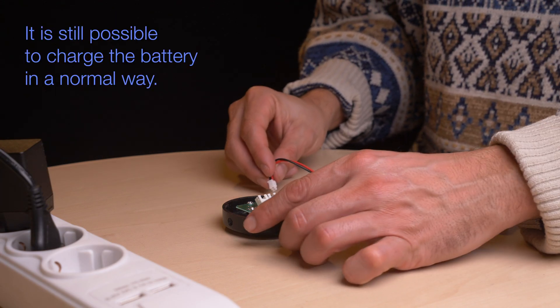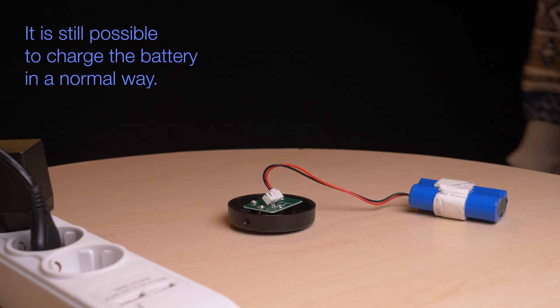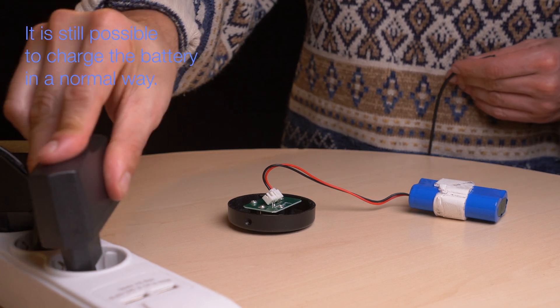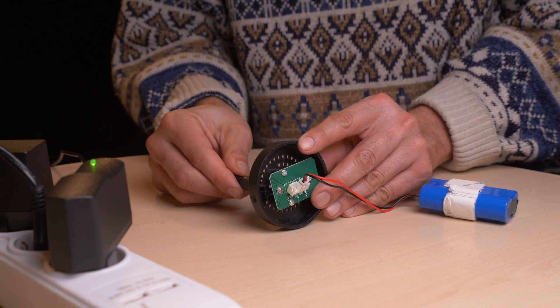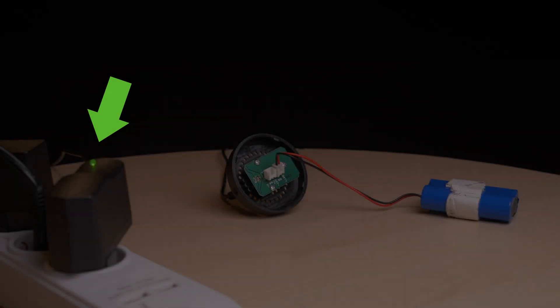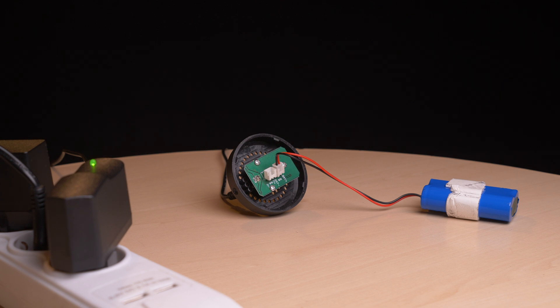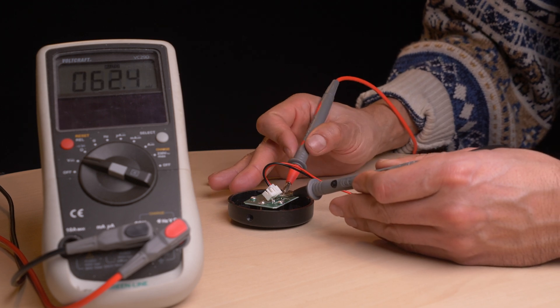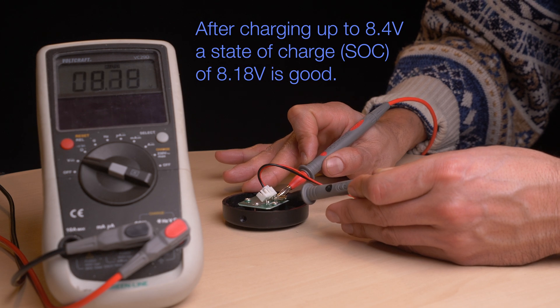It's still possible to charge the battery. Just connect the wire to bat, B-A-T, and charge it as normal. One lithium-ion battery has a normal voltage of 3.7 volts. Two batteries in series make 7.4 volts. The charger goes up to 8.4 volts. When the battery pack is fully charged, measuring an open circuit voltage of 8.2 volts is good.